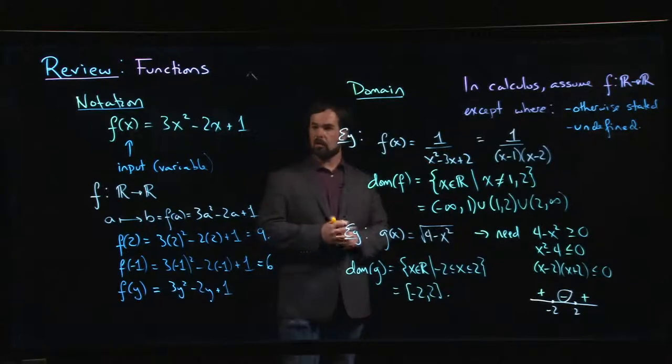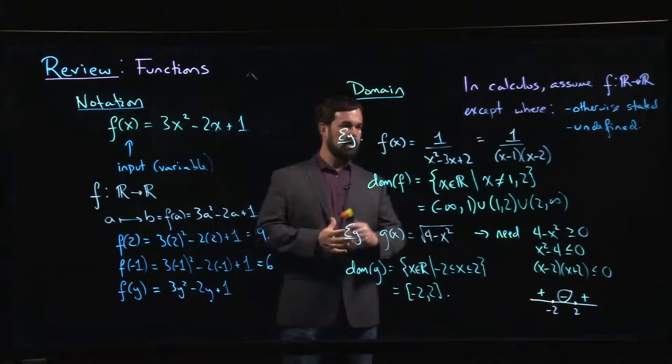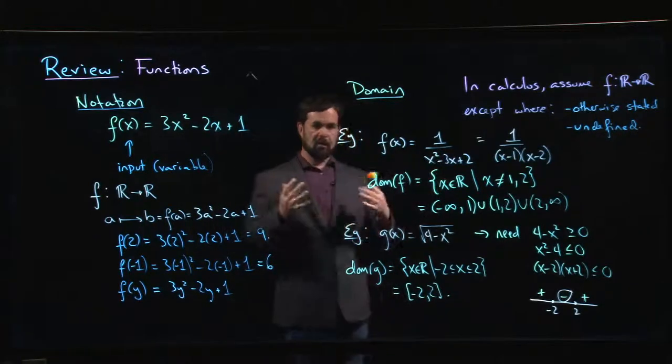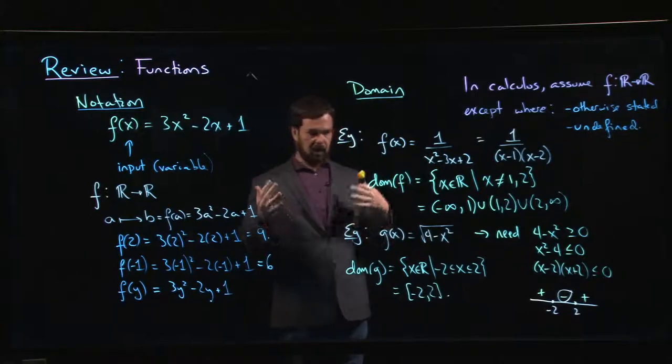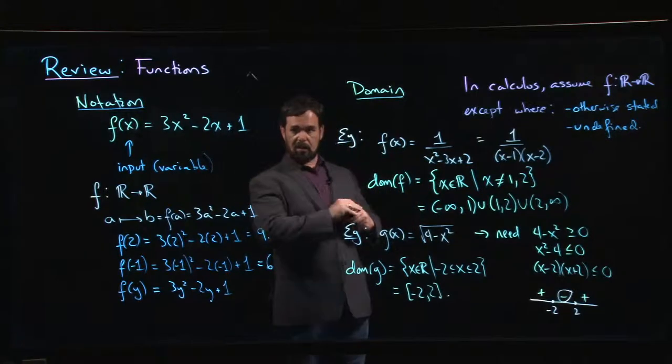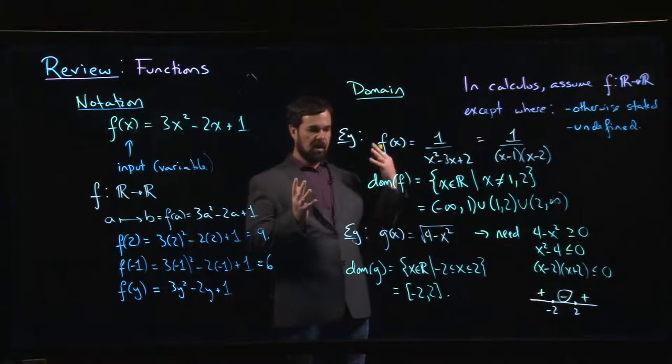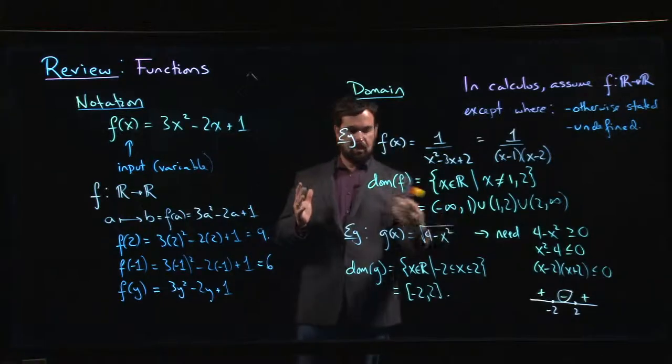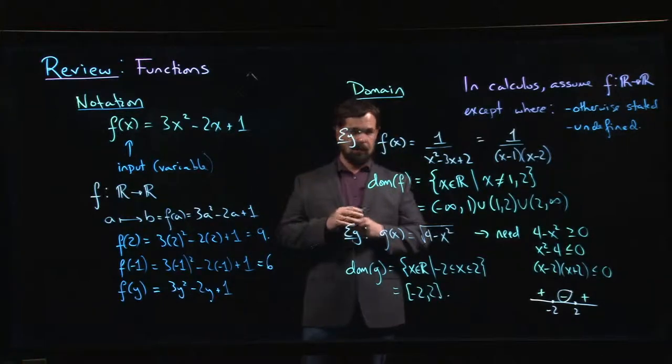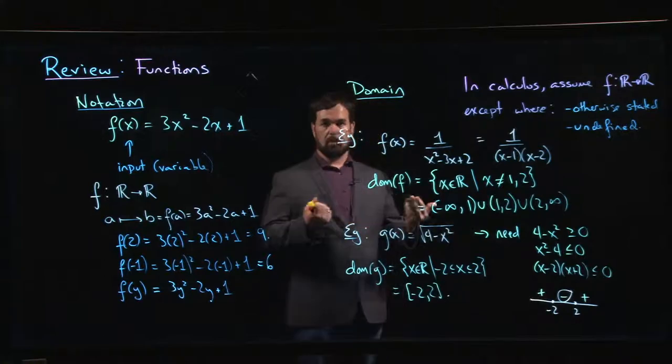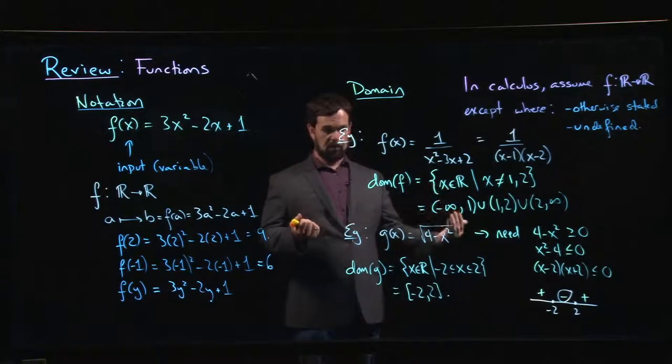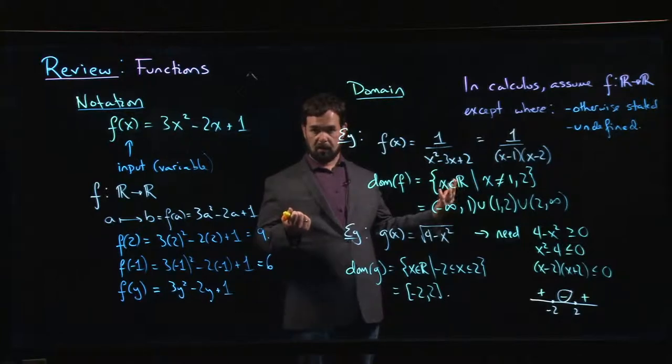So this is typically how we handle domain in calculus. Somebody gives you an expression like this, the first thing you want to ask yourself is: are there any values of x, are there any real numbers for which the function is going to be undefined? Are there any inputs that will not produce an output? I want to know what those are because I don't want to consider them—they're not going to be part of my domain.